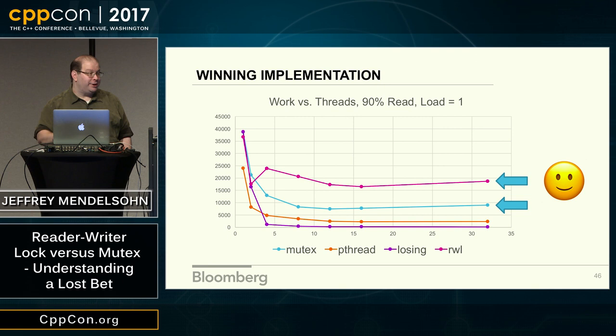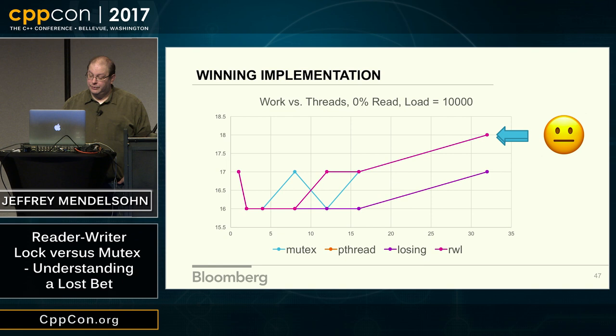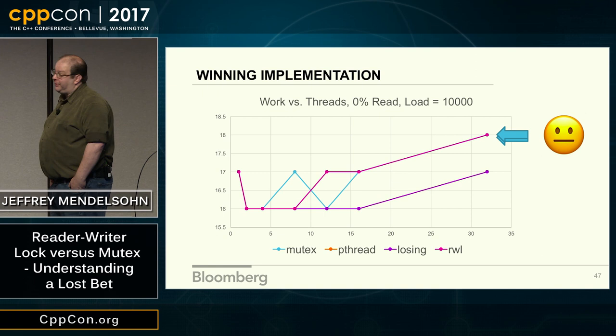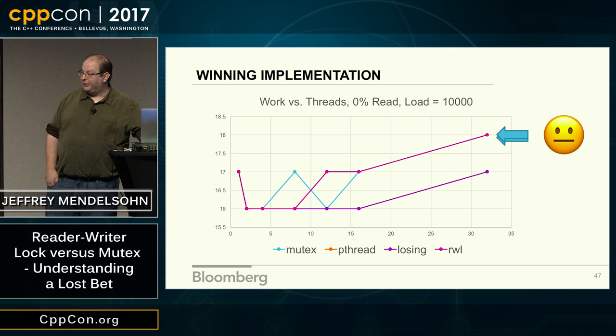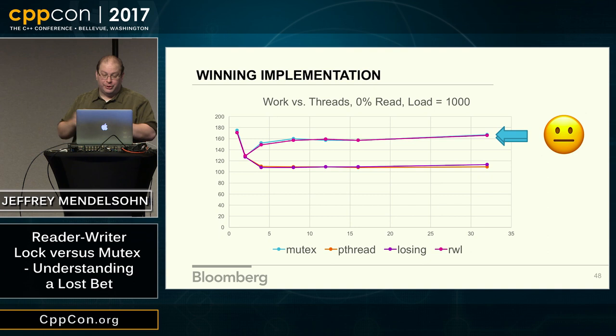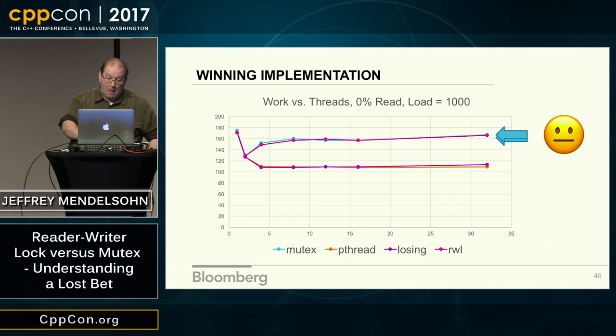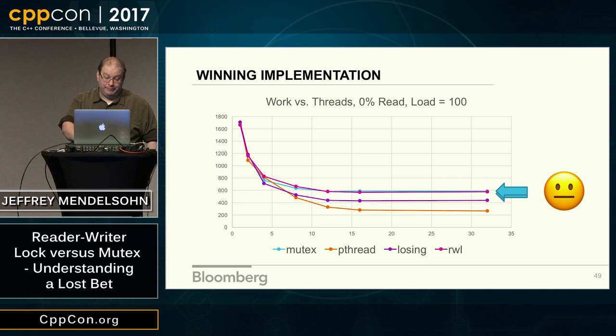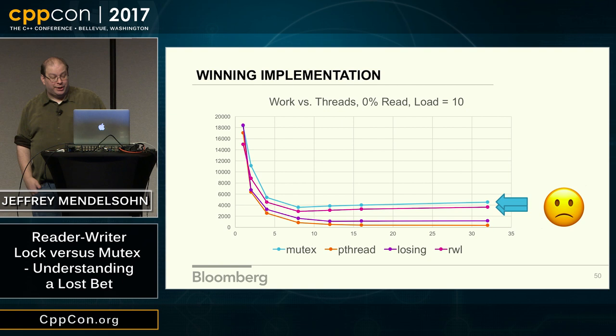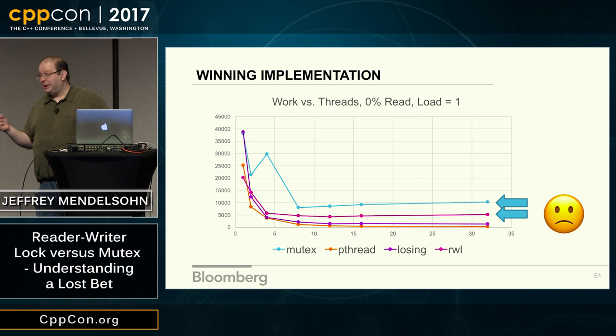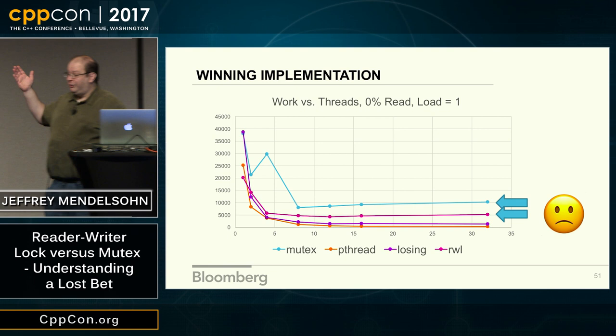Going to a very short hold time at 90% reads, we still see the new implementation winning. At 0% reads — all write work, what a mutex should be good at — the numbers are all basically the same at every thread count, so the graph has no meaning. At a long but not extreme hold time with 0% reads, the new implementation and mutex are basically the same. At the workload of the bet with all write work, they're still the same. At short hold times, mutex starts to edge out the new implementation, and at ridiculously short hold times, mutex outperforms — which it really should, since we're really just a mutex plus overhead.